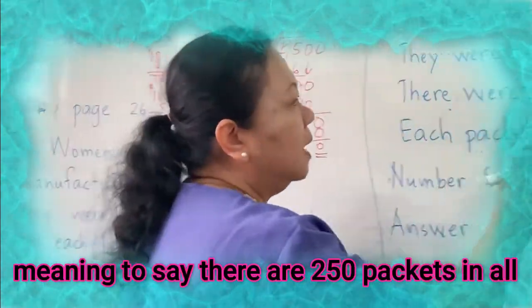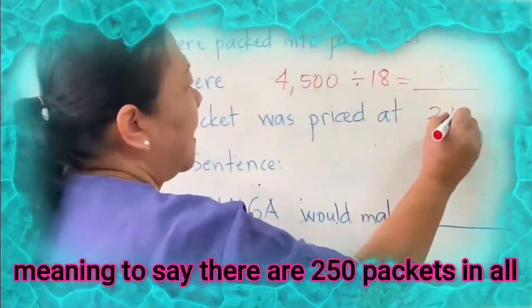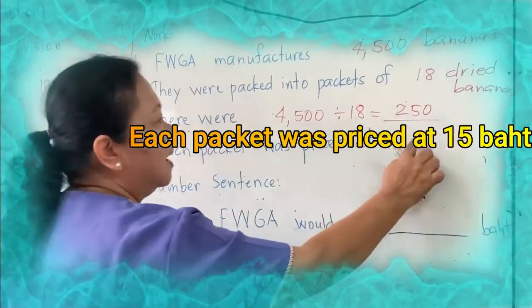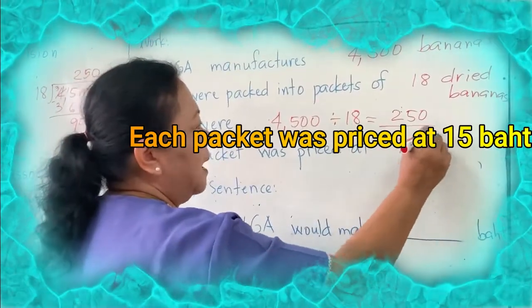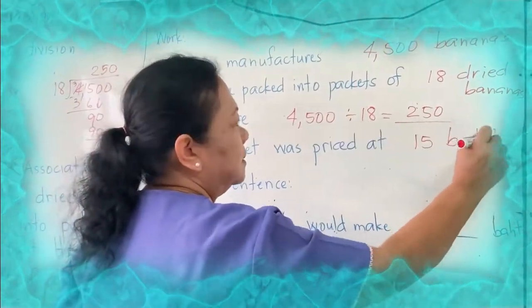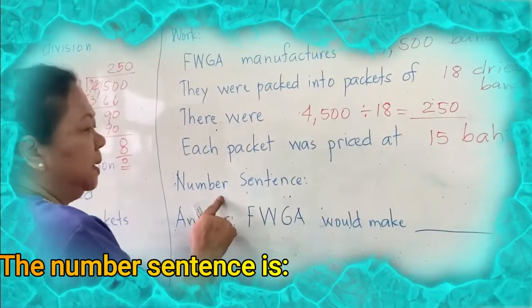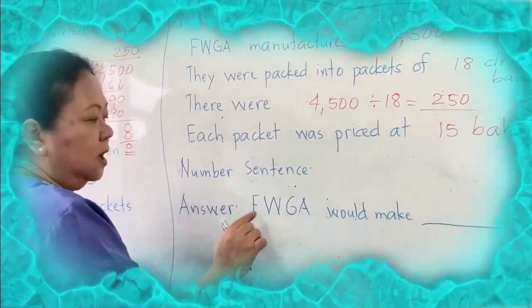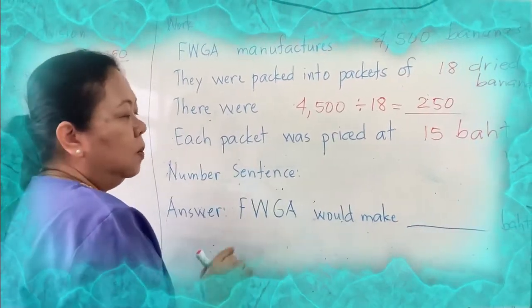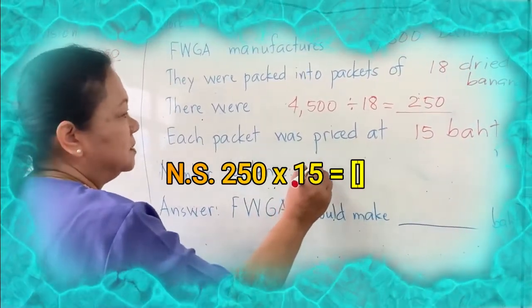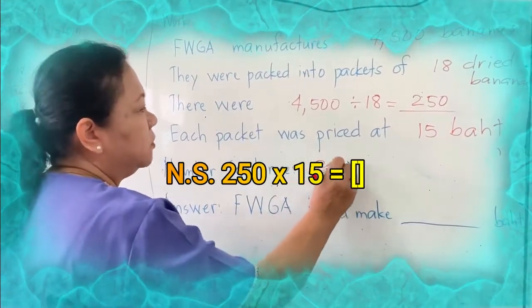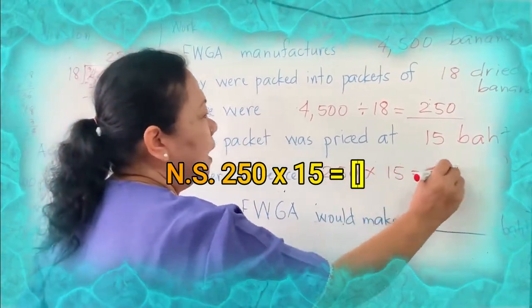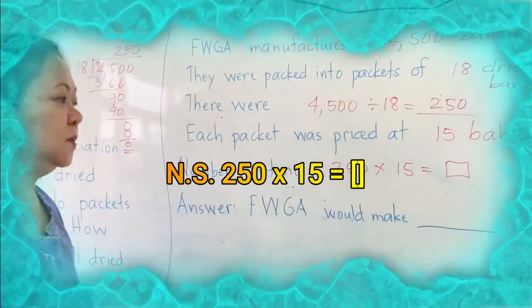Meaning to say, there are 250 packets in all. Then each packet was priced at 15 baht. What will be the number sentence so that we will know how much this FWGA would make? So the number sentence is 250 times 15 is equal to a square. Because we do not know the answer yet.